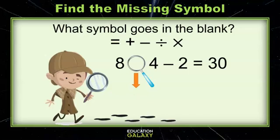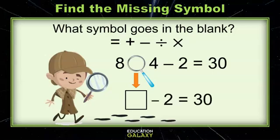We have to do something to 8 and 4 to get this number, so some number minus 2 equals 30. Let's think about what that number would be. What about 32? 32 minus 2 equals 30. So what do we need to do to 8 and 4 to get 32? If you guessed multiply, you are correct. 8 times 4 minus 2 equals 30.